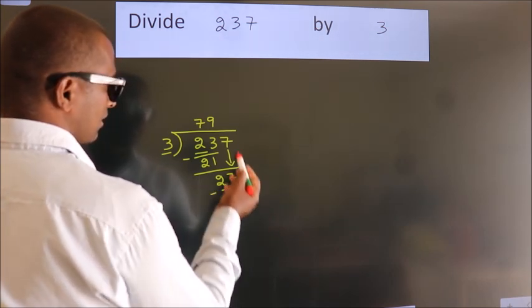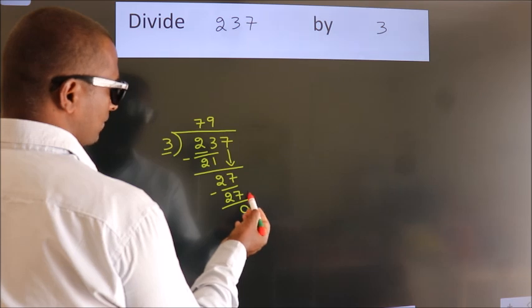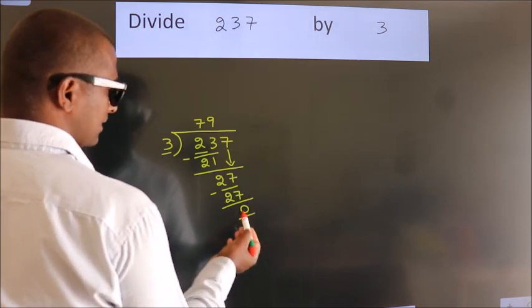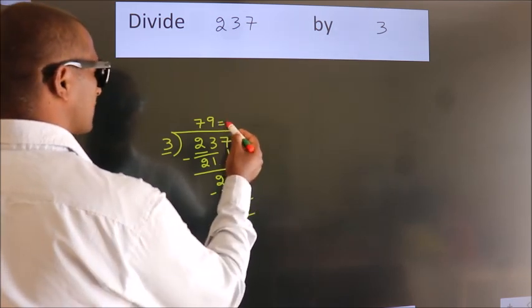After this, no more numbers to bring it down. And we got remainder 0. So this is our quotient.